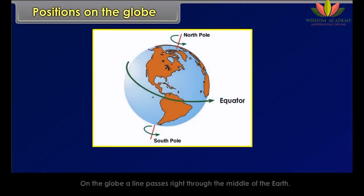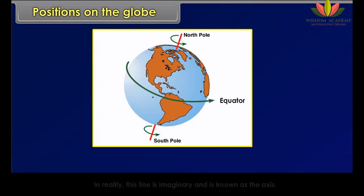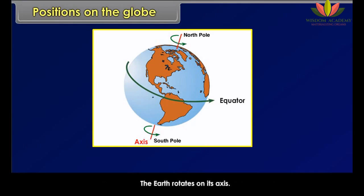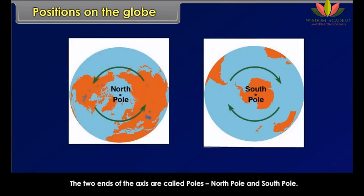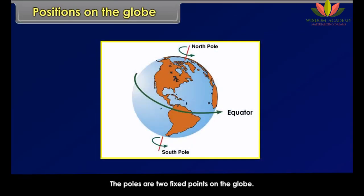Positions on the Globe. On the globe, a line passes right through the middle of the earth. In reality, this line is imaginary and is known as the axis. The earth rotates on its axis. The two ends of the axis are called poles — North Pole and South Pole. The poles are two fixed points on the globe. The axis is inclined at an angle of 66 and a half degrees towards the east.